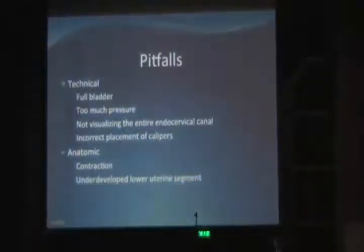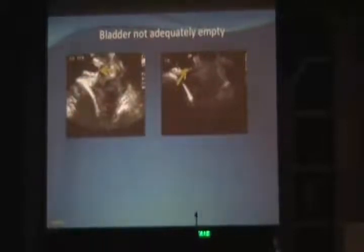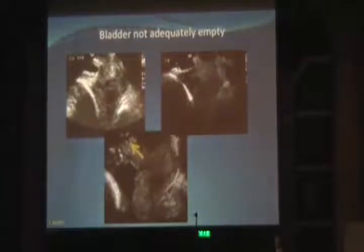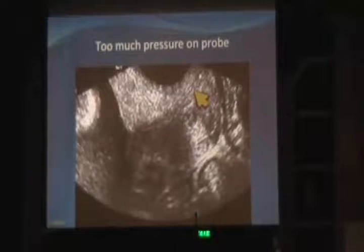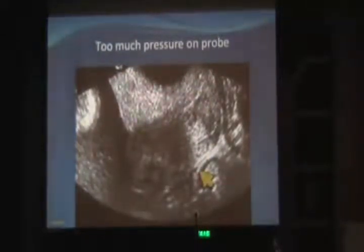There are several potential pitfalls of transvaginal ultrasound, both anatomic and technical, and you want to make sure to avoid them. As you can see in these sonographs, we used to not be attentive to emptying the bladder, but it is very important. A too-full bladder masks funneling that may be occurring. We also want to make sure we don't put too much pressure on the probe — excessive pressure causes the anterior lip echogenicity to increase, the anterior lip to appear too wide, and it becomes much thinner than the non-compressed posterior lip of the cervix.